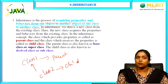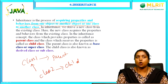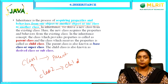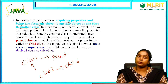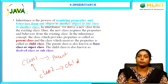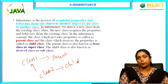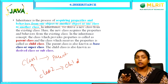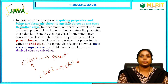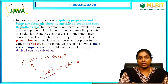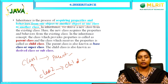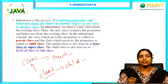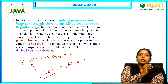This is based on real-life entities. Your father and mother are parent classes, and you acquire facial features and behavioral traits from them. You are the child class acquiring properties from your parents. This process is called inheritance. Class one is the parent class and class two is the child class. The parent class is also known as the base class or super class, while the child class is also known as the derived class or subclass.